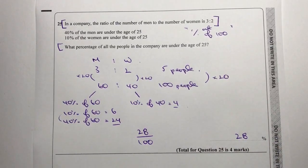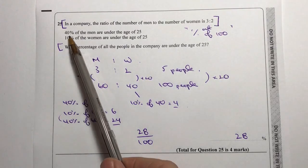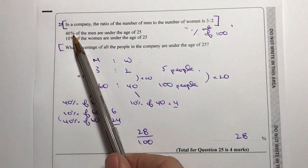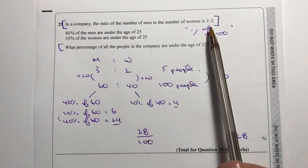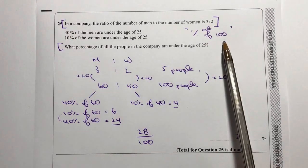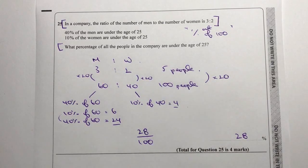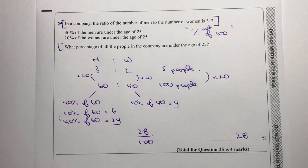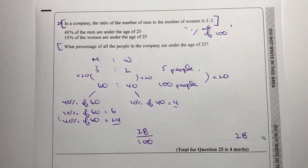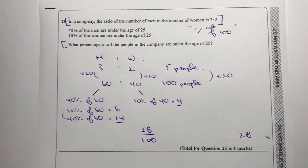Sometimes these types of questions become much easier if you spot that they're talking about percentages. If that is the case, remember percentage means out of 100, so it makes it easier to change the rules slightly and make it out of 100 people. Let's move on to question 26.